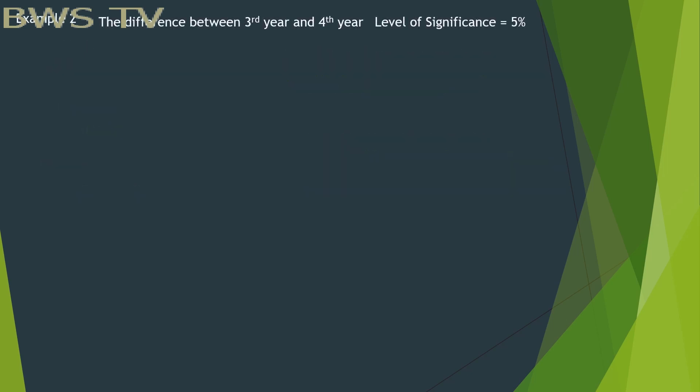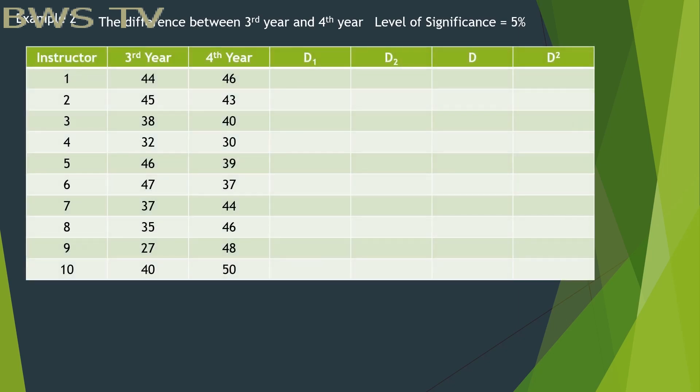Example 2. The difference between 3rd year and 4th year. Now that the rank isn't given, we have to assign a rank to them from largest to smallest. So first column of variables is for D1 and second for D2. After the first column, we will rank the second.